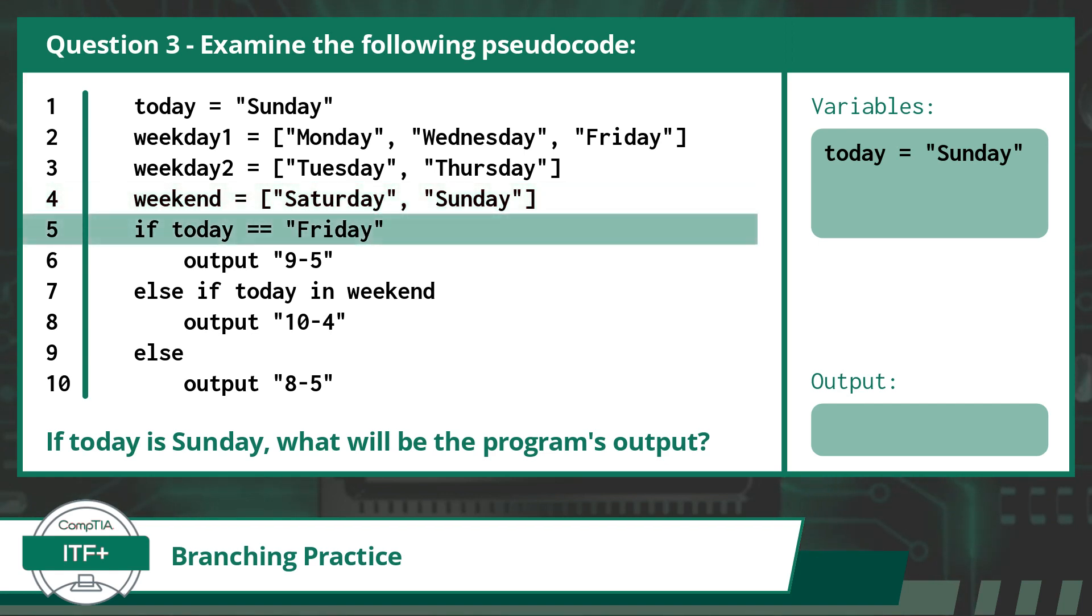In line 5, we see this question is once again testing us on the concept of branching, and this line is our if branch. Our conditional statement is asking us to check if the value of today is equal to Friday. And here I have an opportunity to teach you something new.